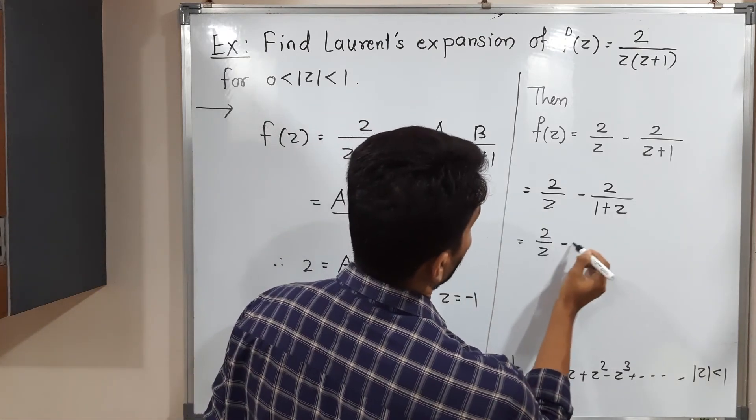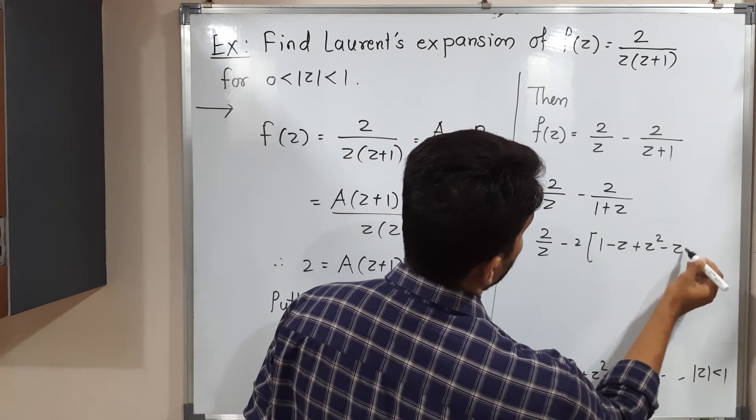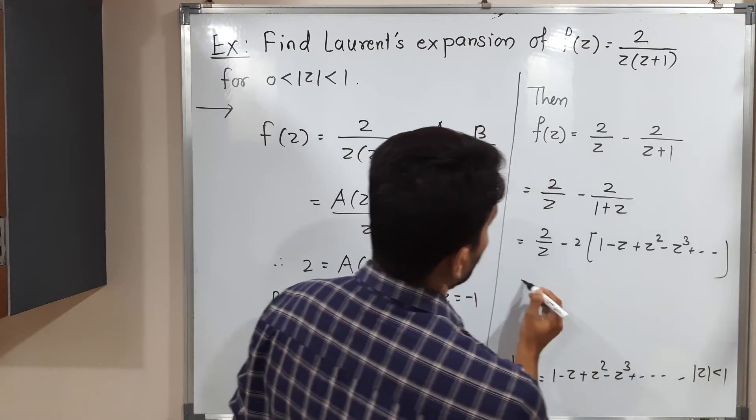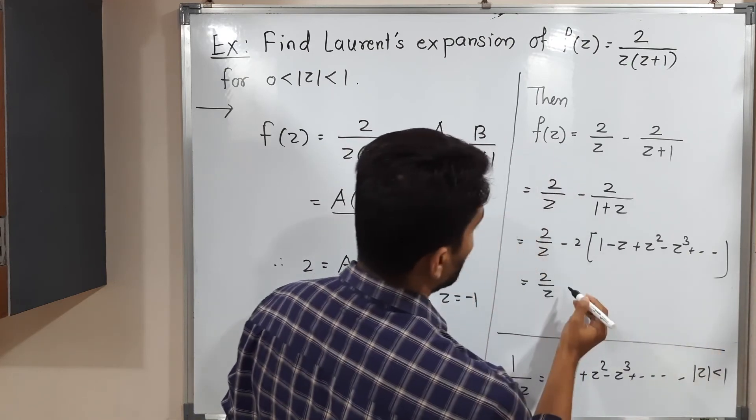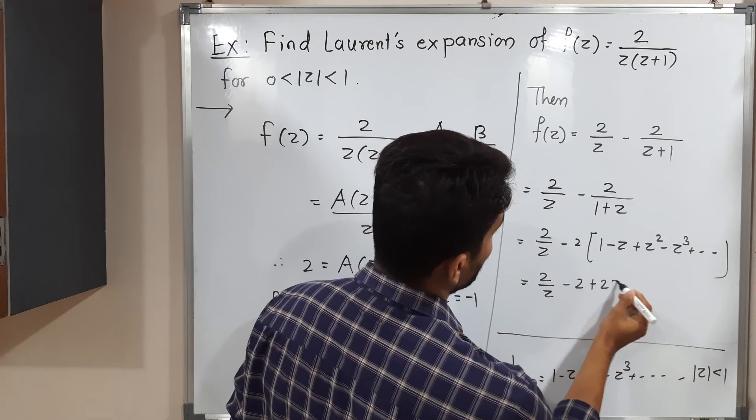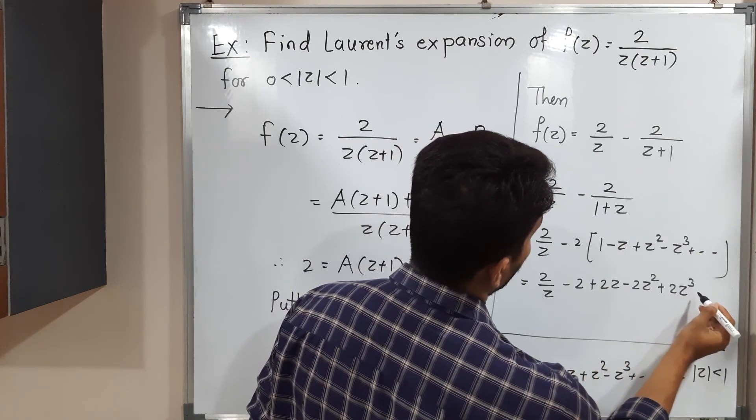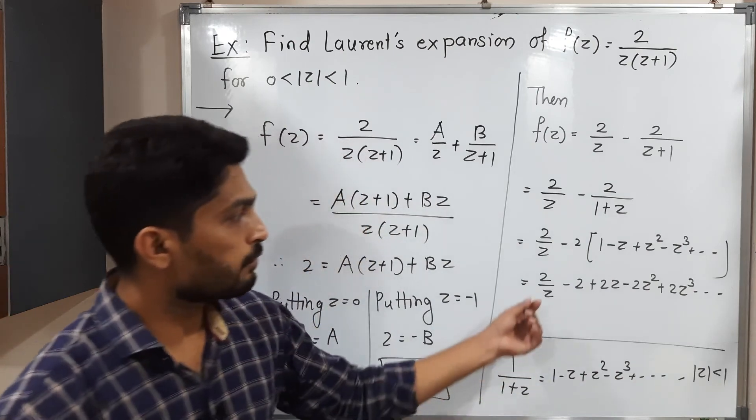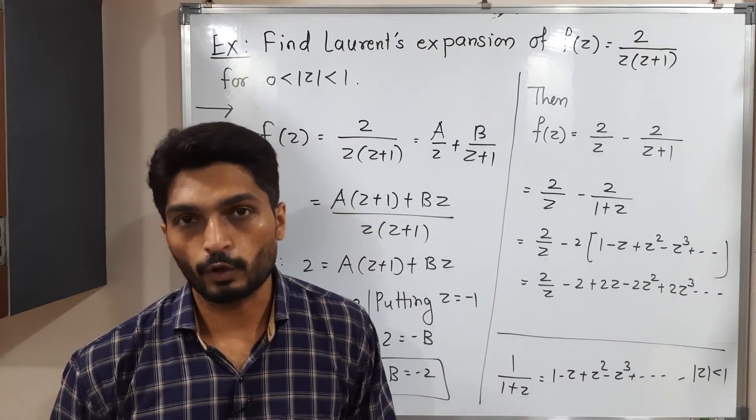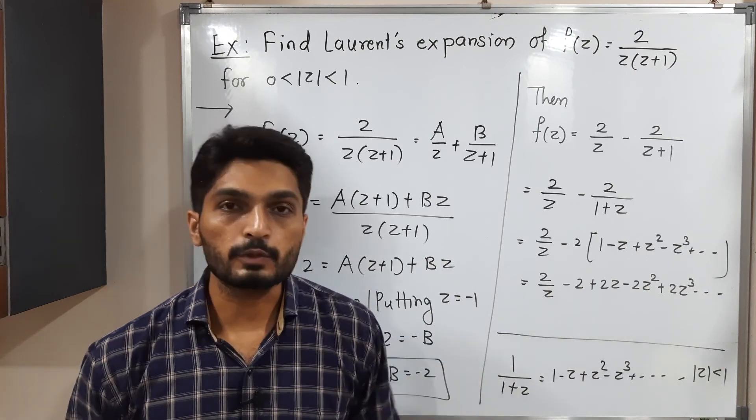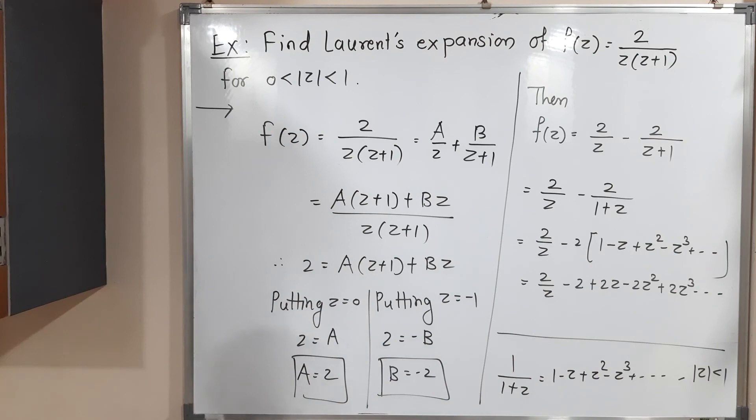This is 2 by z minus 2 times 1 minus z plus z squared minus z cubed and so on. If you solve the bracket, it will look like: 2 by z minus 2 plus 2z minus 2z squared plus 2z cubed and so on. For the first term, z is in the denominator, that is the principal part of the Laurent series. For remaining terms, z is in the numerator, that will be the analytical part.